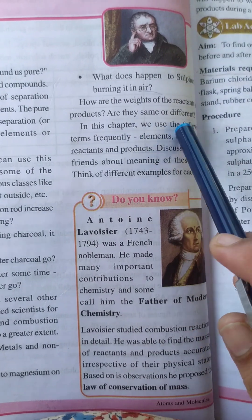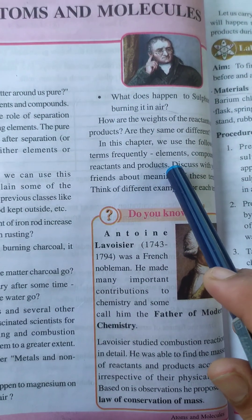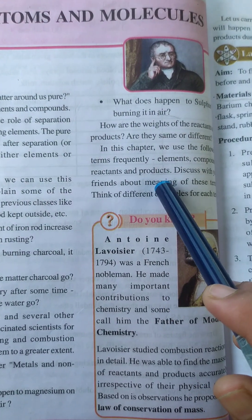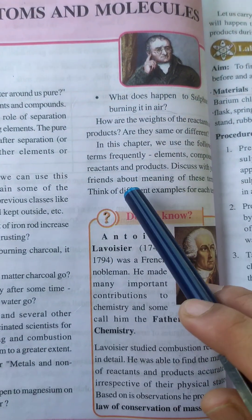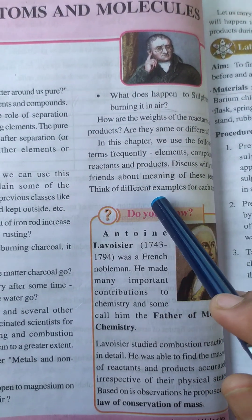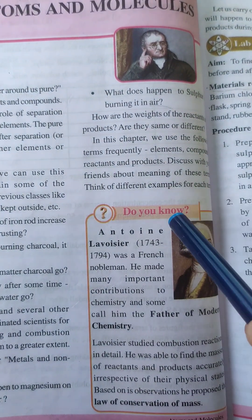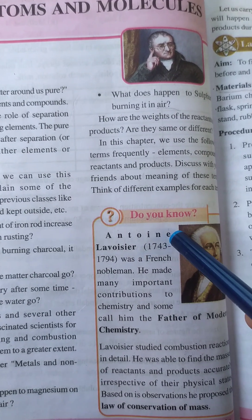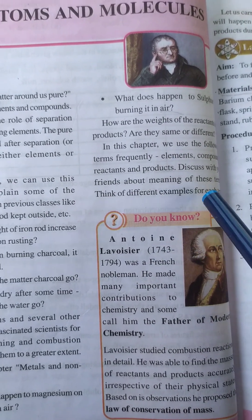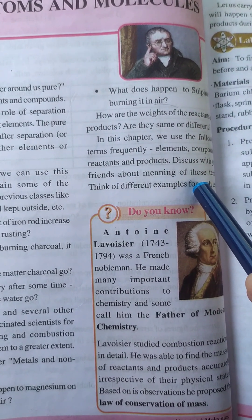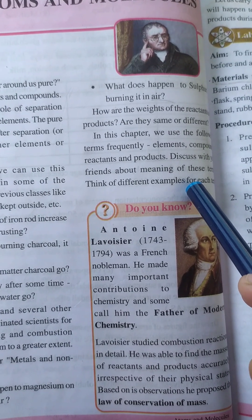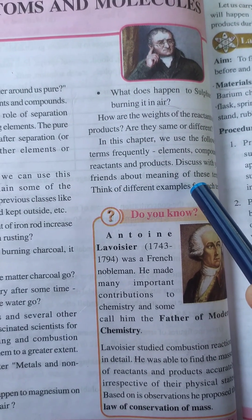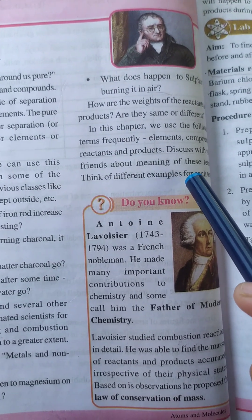What will we learn from this lesson? We learn about elements, compounds, and products. Two or more items combined will be elements. For example, H2 is an element, and C2 is carbon.